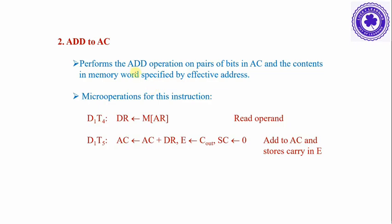ADD to accumulator performs the add operation on pairs of bits in the accumulator and the contents of the memory word specified by the effective address. First, read the memory word into the data register, then perform addition of the accumulator with the data register value and store the result into the accumulator. The addition may cause a carry output which will be stored into the E flip-flop.